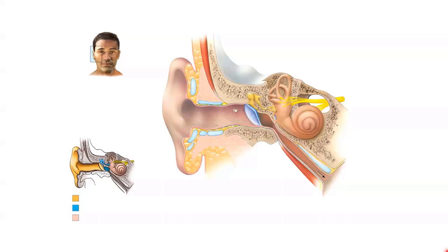Very briefly, the external ear collects sound waves and channels these inwards. The middle ear conveys sound vibrations to the oval window. And the inner ear houses the receptors for hearing and equilibrium. Looking at this image, you can see those three regions highlighted by different colours: the external ear in yellow, the middle ear in blue, and the inner ear in pink.